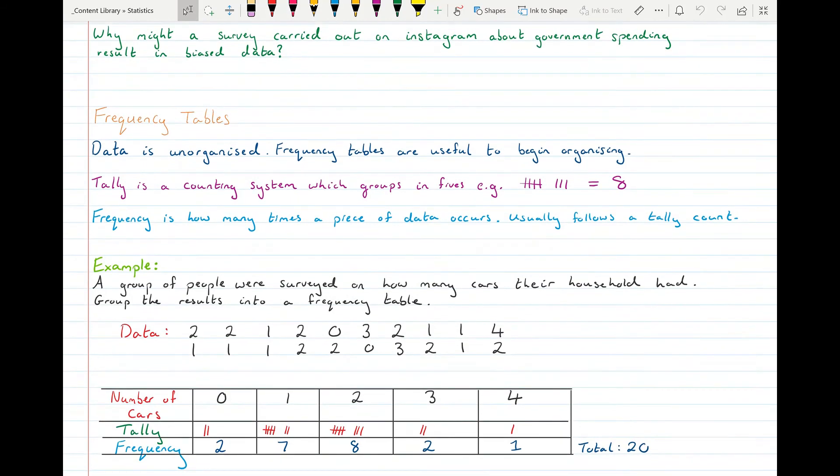Once you've the data collected, you need to begin organizing it because we said that the data was unorganized information. So we need to begin organizing it before we can actually do some statistics on it. Frequency tables are a good place to begin. And we use a tally system in frequency tables. A tally will be where you're counting it up with little marks.